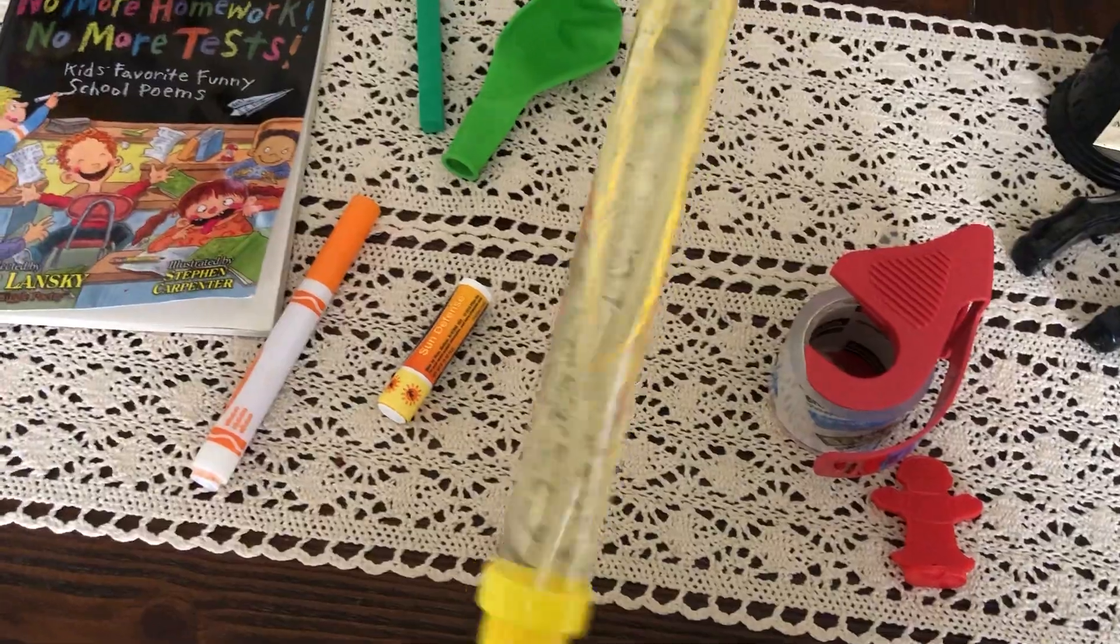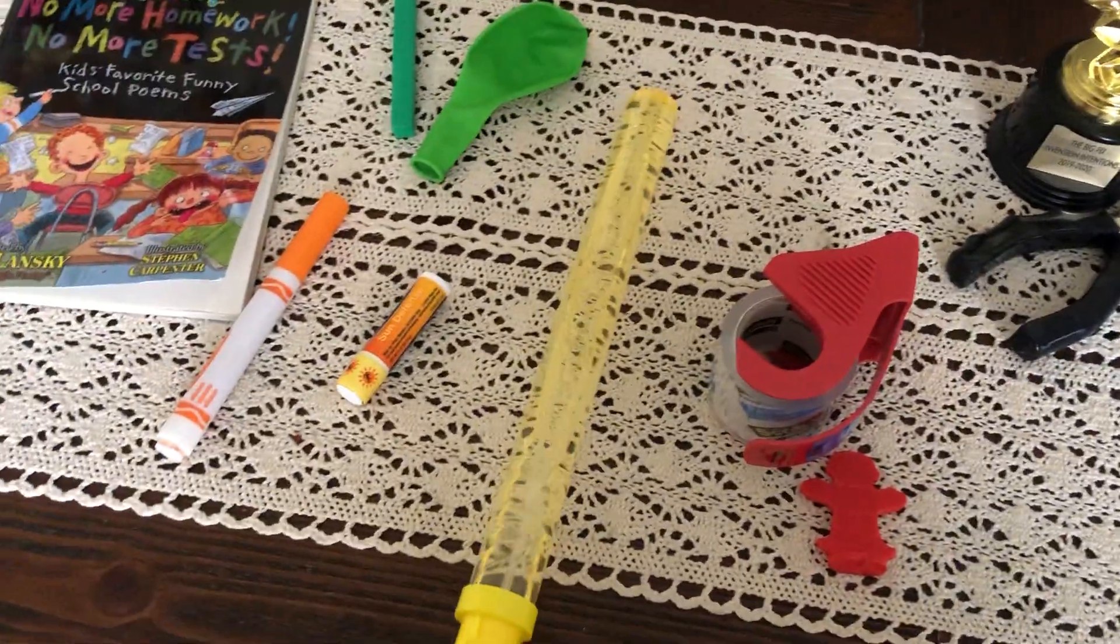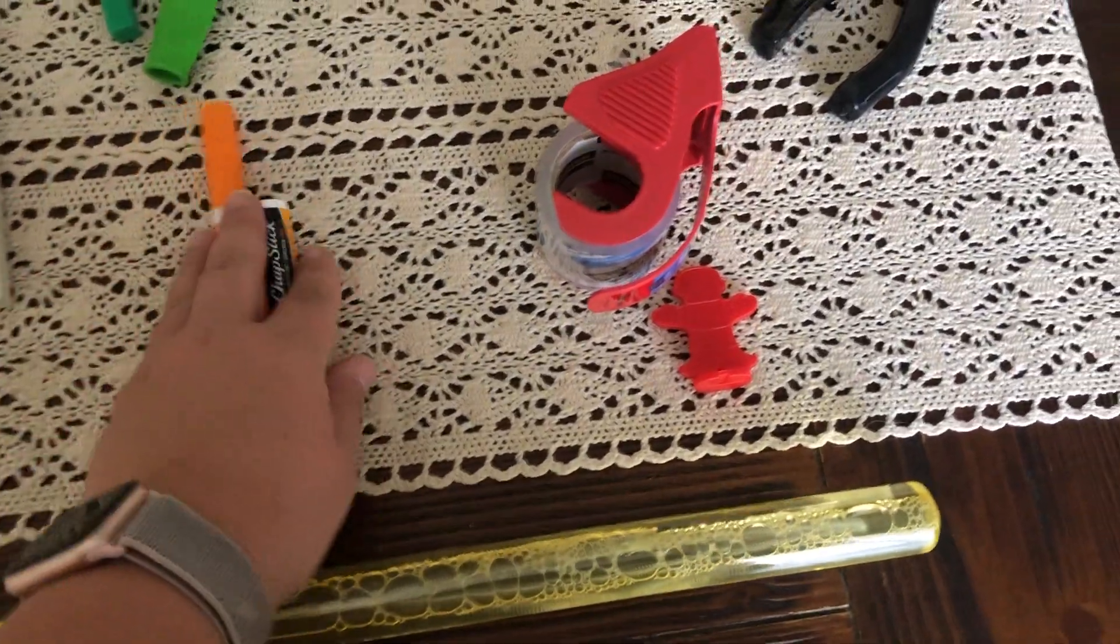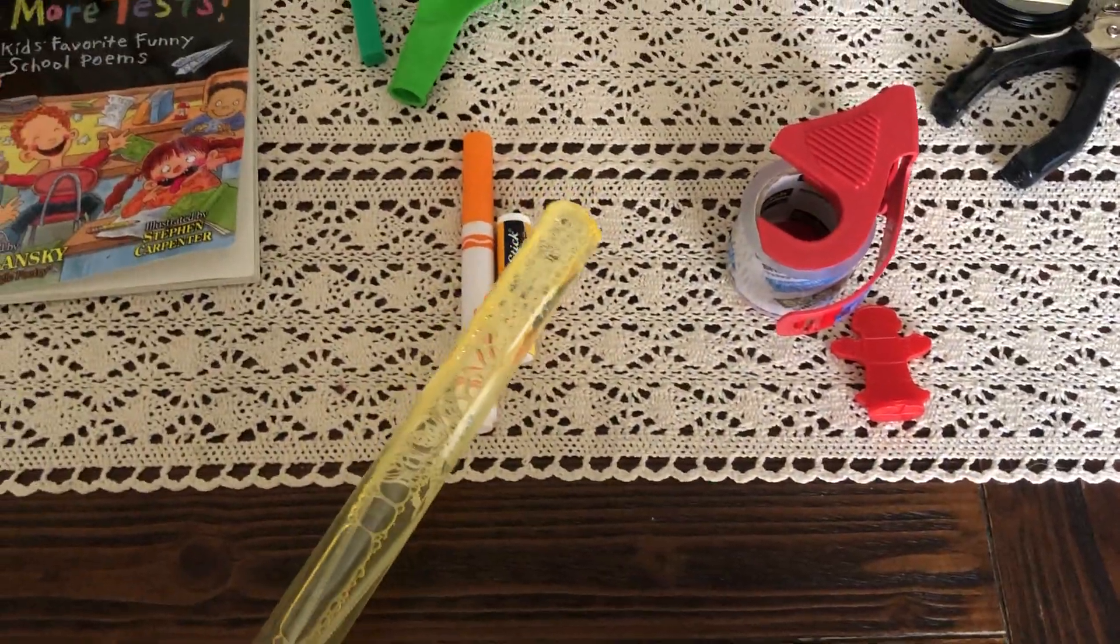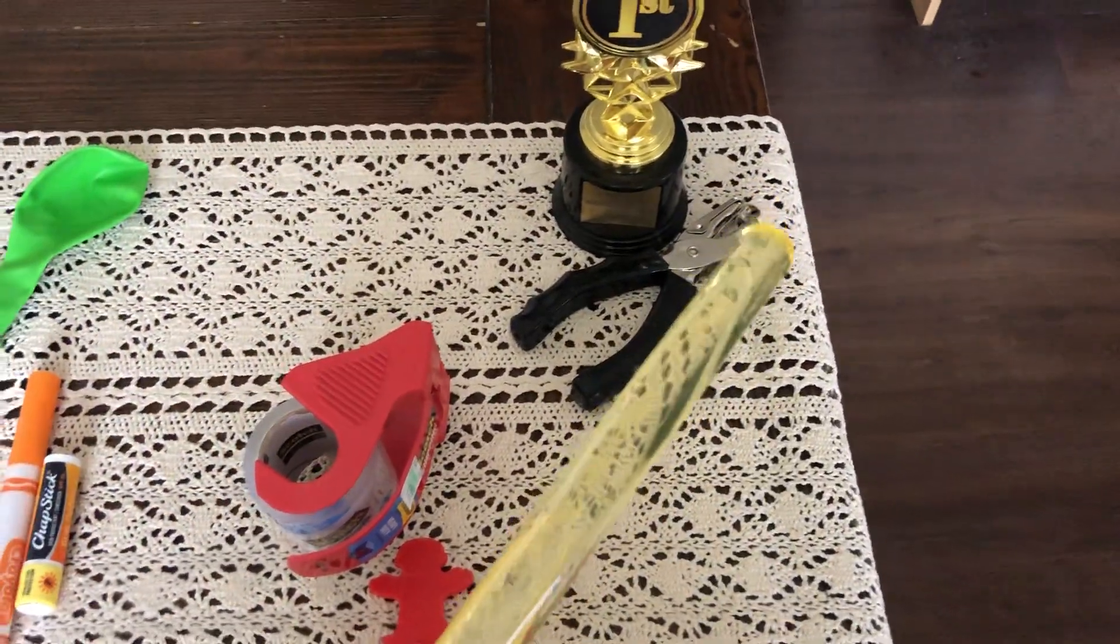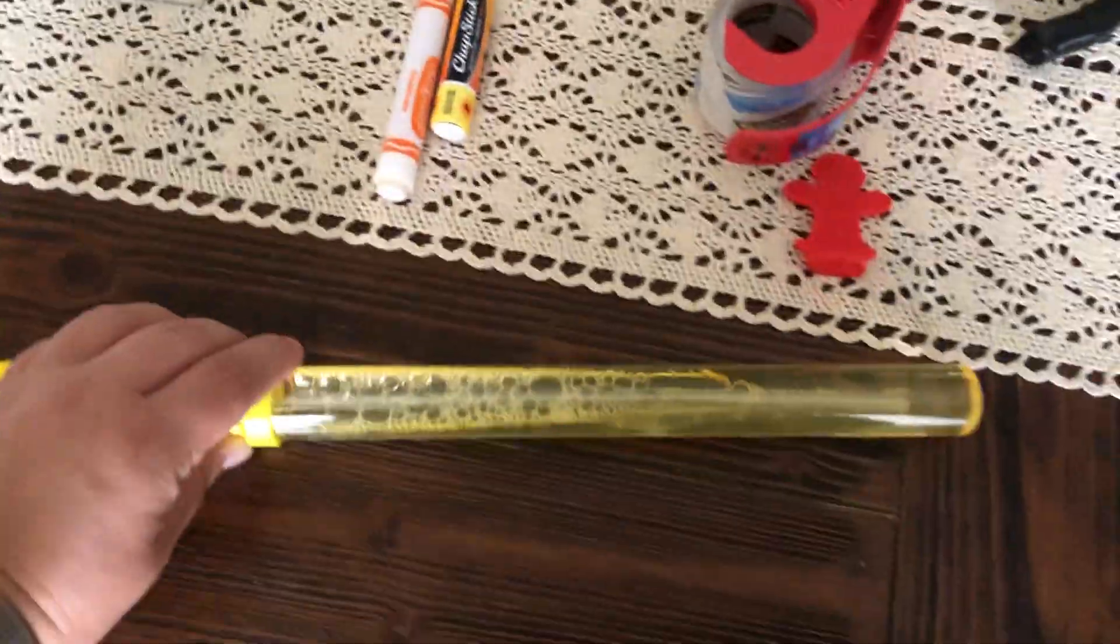And then I have yellow, my yellow bubble wand. I think that I'm going to make my yellow bubble wand its own group because it doesn't really fit in with the orange, it doesn't fit in with the red, and it really doesn't fit in with the black or the green. So I'm going to make it its own group.